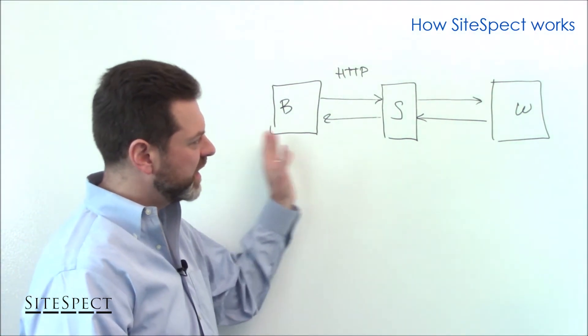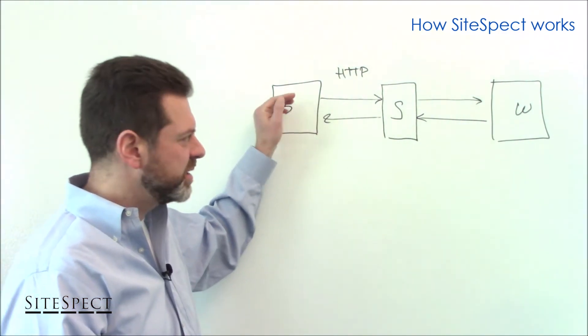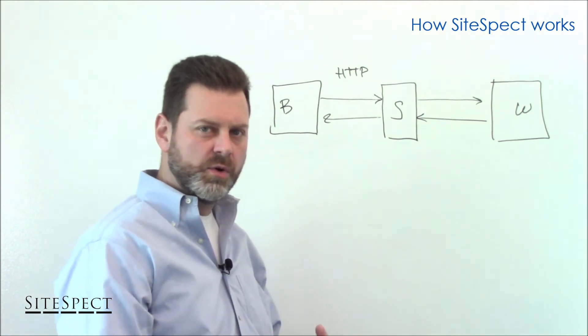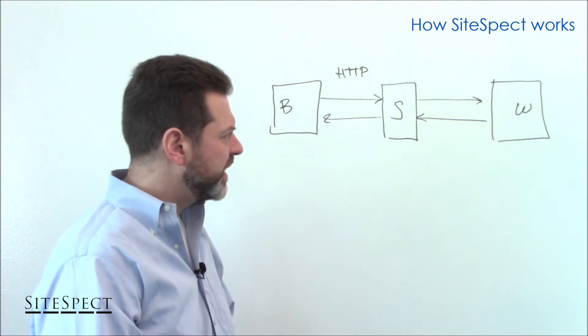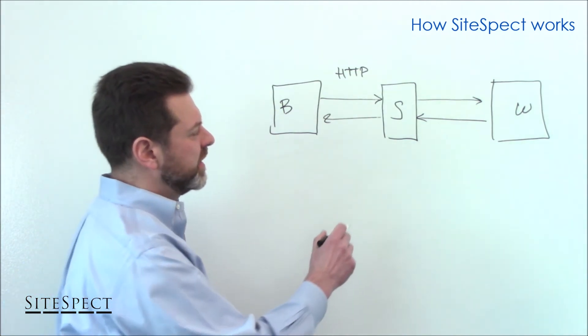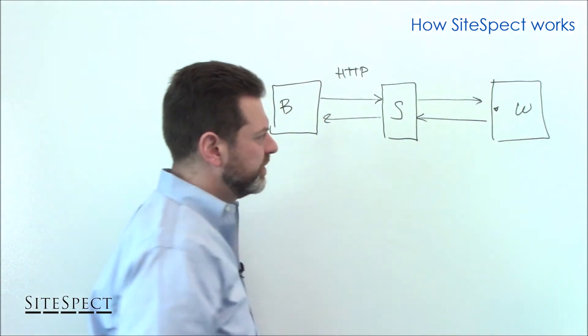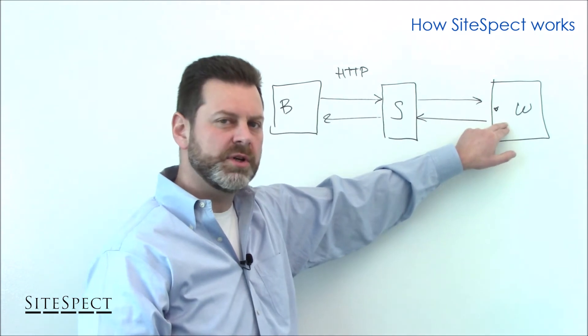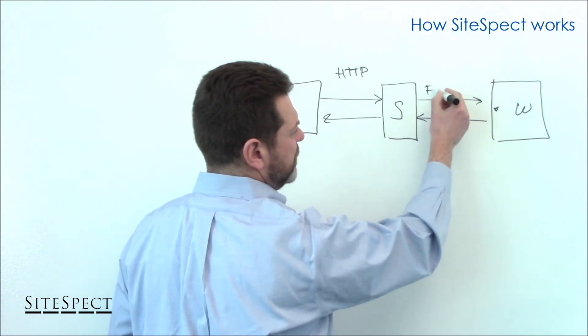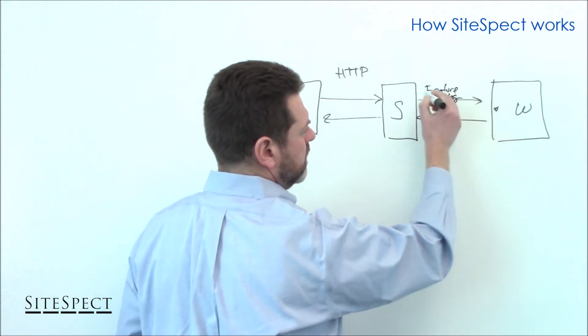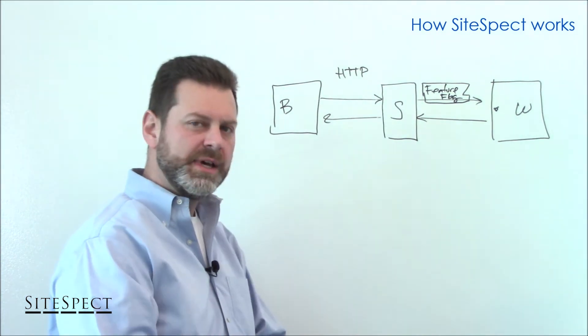Now, another interesting thing about this sort of flow diagram is that not only can we manipulate the response, but we can also manipulate the request. And this is the core of what we call origin experiments. And we really pioneered this in the market in the 2012, 2011, 2012 timeframe. And essentially what's happening is if you want to run a server-side experiment where some feature functionality, some business logic, or what have you that's on the web server needs to be manipulated or adjusted, on the request flow, SiteSpect actually is going to add a feature flag.